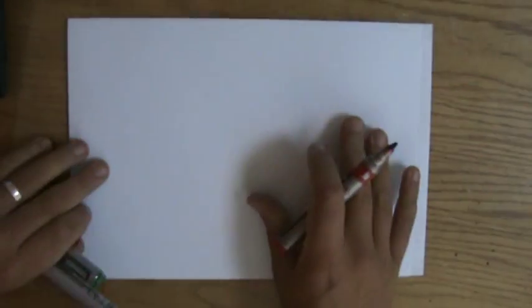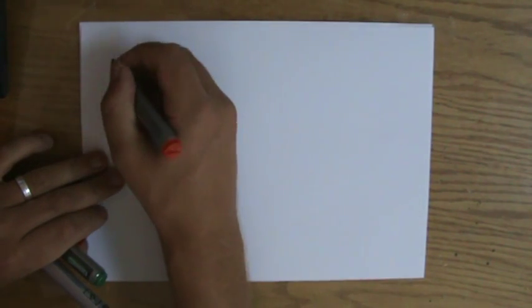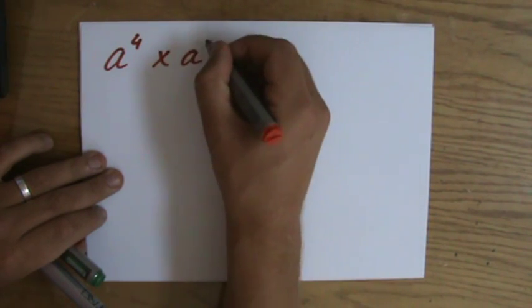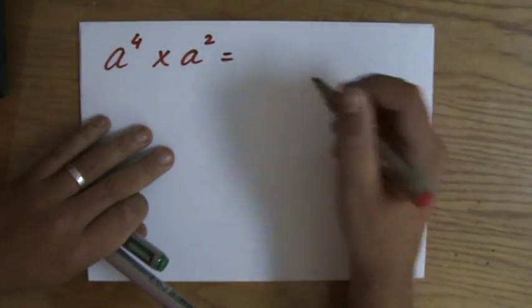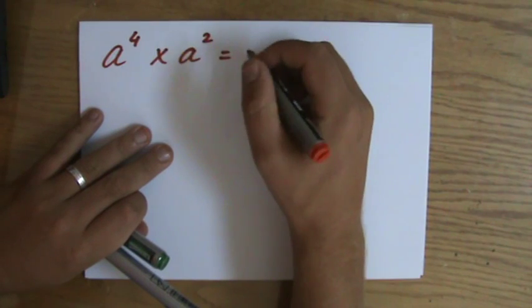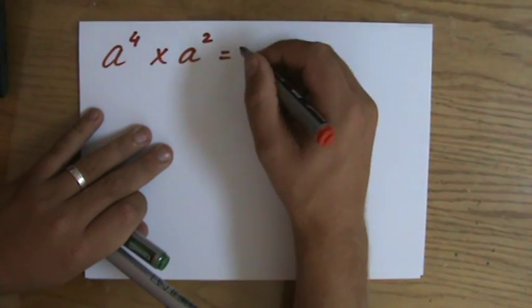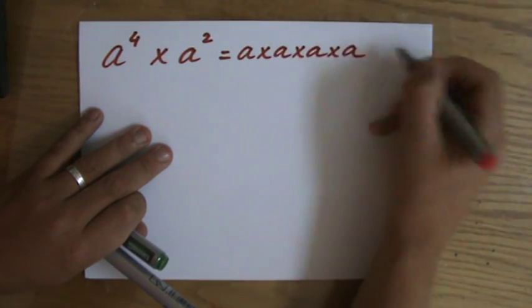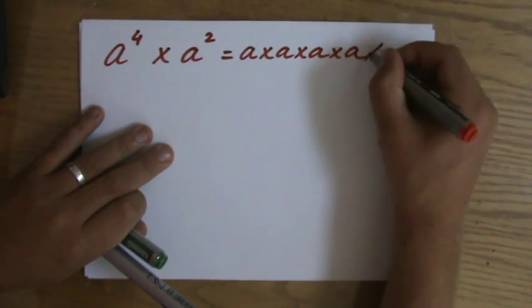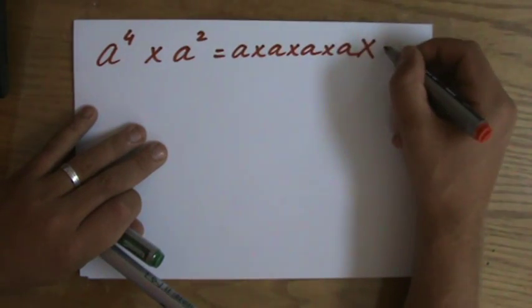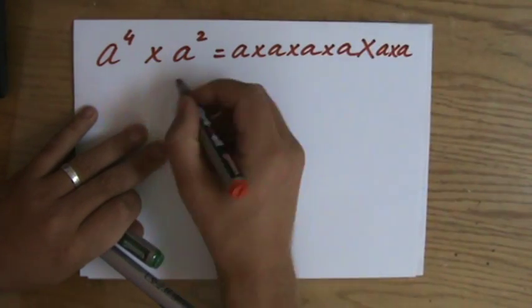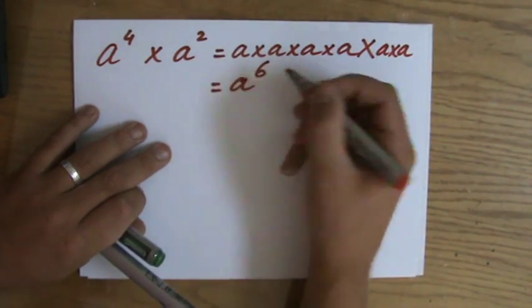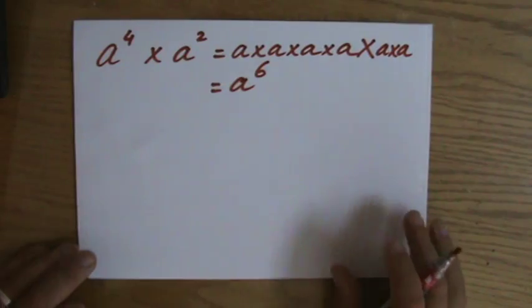Now let's have a look at another question. For instance, a to the power 4 times a to the power 2. The bases are the same, so this is a times a times a times a times a times a. That's 1, 2, 3, 4, 5, 6 a's. So a to the power 6. You add the indices.